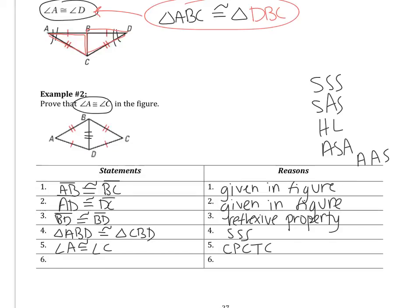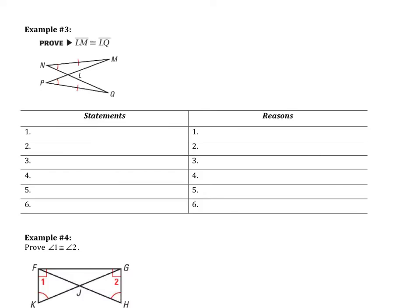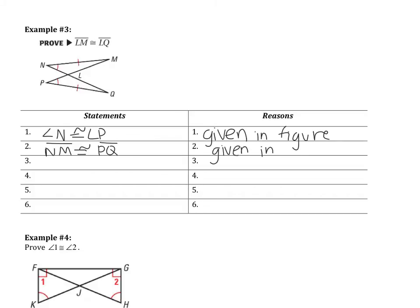That's how this theorem is used — if two triangles are congruent, their corresponding parts are congruent. Let's look at another proof. I'm going to start it and then let you finish it. First, angle N is congruent to angle P — that's given in the figure. NM is congruent to PQ — also given in the figure.